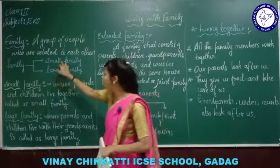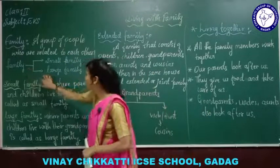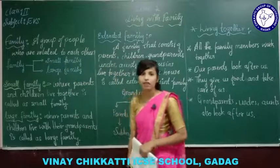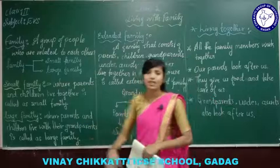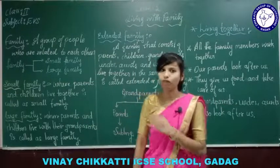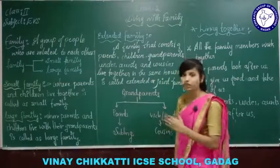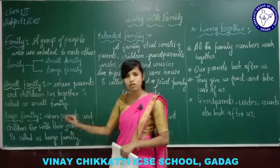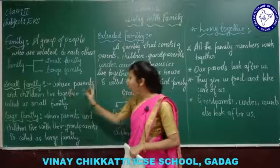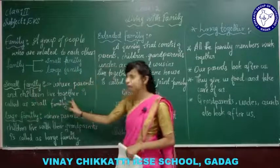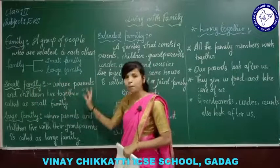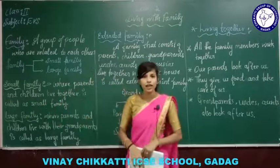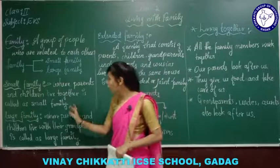In a family there are two types: one is small family and another one is large family. So let us talk about the small family. Small family is where parents and children live together — that is called a small family.